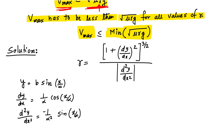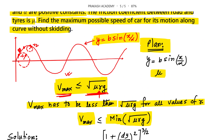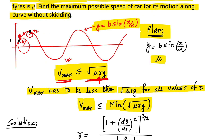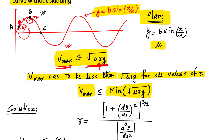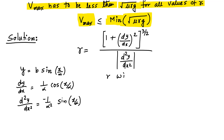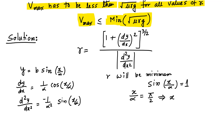When will the radius of curvature be minimum? The radius of curvature will be minimum at the top point — let us call this point B — when the sin function is maximum. So R will be minimum when sin(x/α) = 1, which means x/α = π/2, and therefore x = πα/2. When x equals this value, sin is maximum and the radius of curvature is minimum.